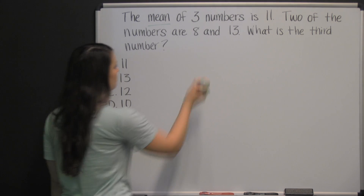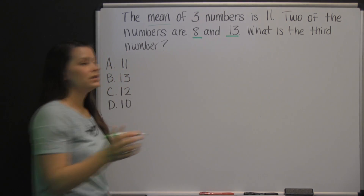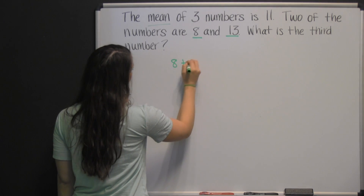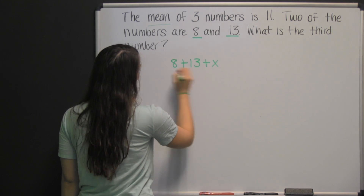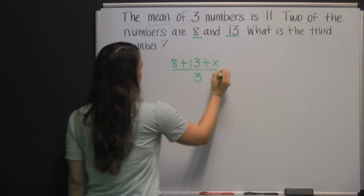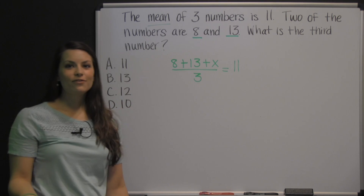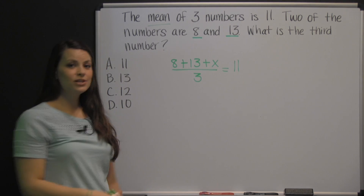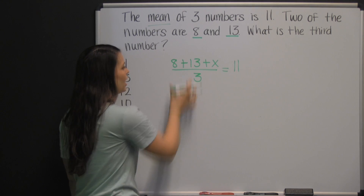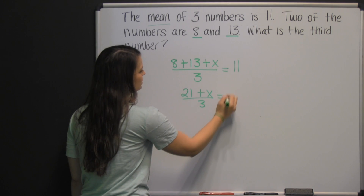So if we were going to add all of our numbers together, we'd be adding eight, thirteen, and x for the third number, because that's the one we don't know. Eight plus thirteen plus x, then we would divide that by the number of numbers, which is three, to yield our average, which we were given was eleven. Now we need to solve this equation. The first thing you want to do is simplify by combining the eight and the thirteen. Eight plus thirteen is twenty-one. So: twenty-one plus x, divided by three, equals eleven.